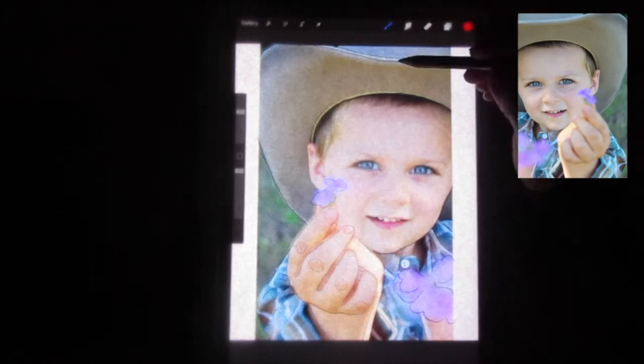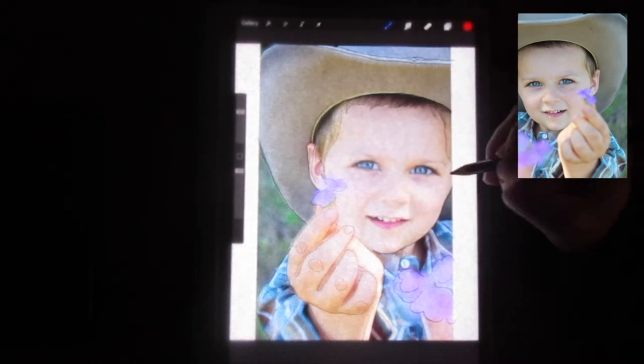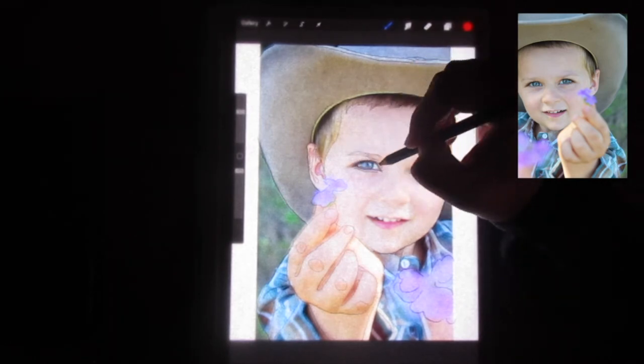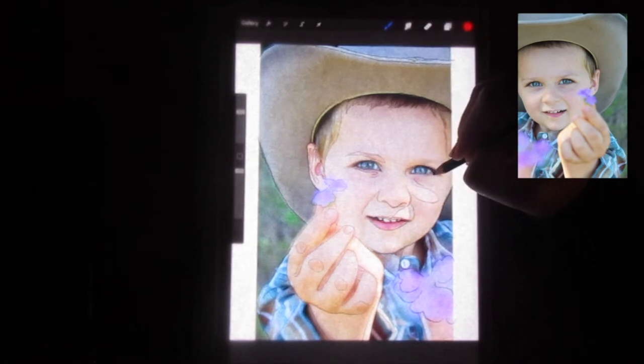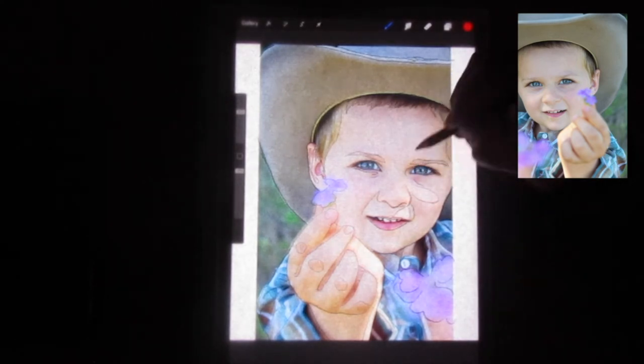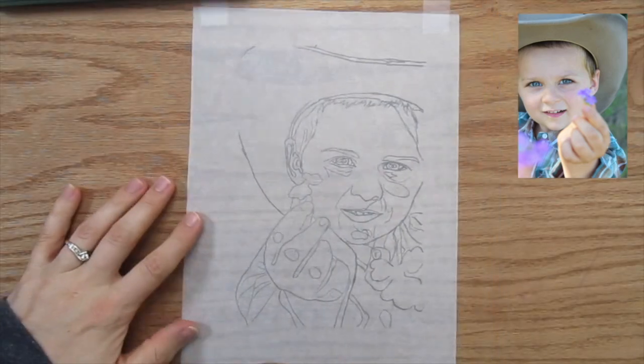For this method, however, you can apply quite a bit of pressure. We're going to want a lot of graphite on that transfer paper for when we flip it over and push it onto the actual paper that we're doing our project on. Once you're done, it should look something like this.